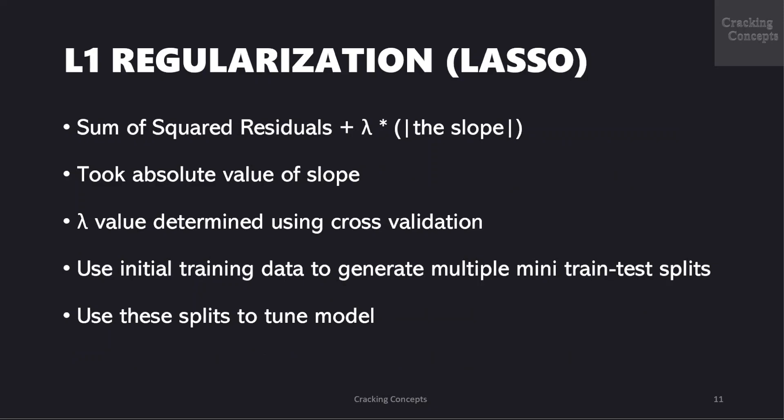Now lasso regression is given by sum of squared residuals plus lambda into the absolute value of slope. Lambda value can have any values from zero to positive infinity and is determined using cross-validation. Now what cross-validation does is it will use the initially used training data to generate multiple mini train test splits and use these splits to tune the model further.